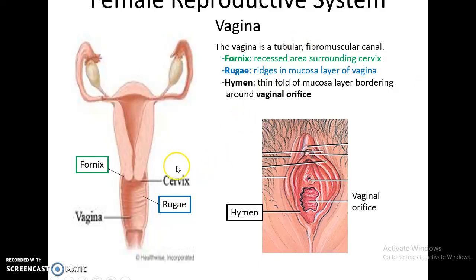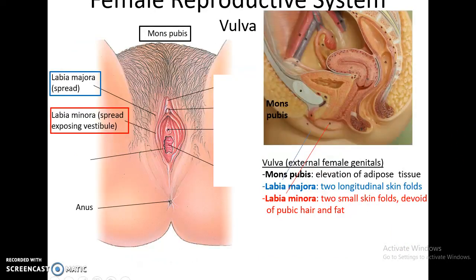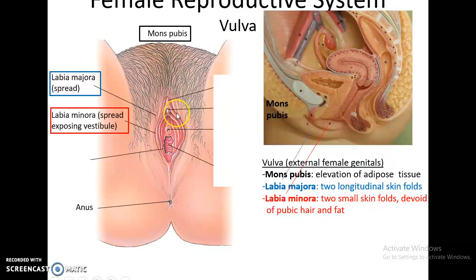The vagina is a tubular fibromuscular canal. It has a fornix, which is the small space around the cervix that pushes slightly into the vagina. The vaginal walls have many ridges called rugae. At the entrance of the vagina, in many females, there are thin folds of the mucosal layer called the hymen, which partially cover the vaginal orifice. The vulva refers to the female external genitalia, including the mons pubis, a mound of adipose tissue over the pubic bone; the labia majora, the thick outer folds with pubic hair; the labia minora, thin inner folds with blood vessels but no hair or fat; and the vestibule, the space between the labia minora containing the urethral and vaginal orifices.